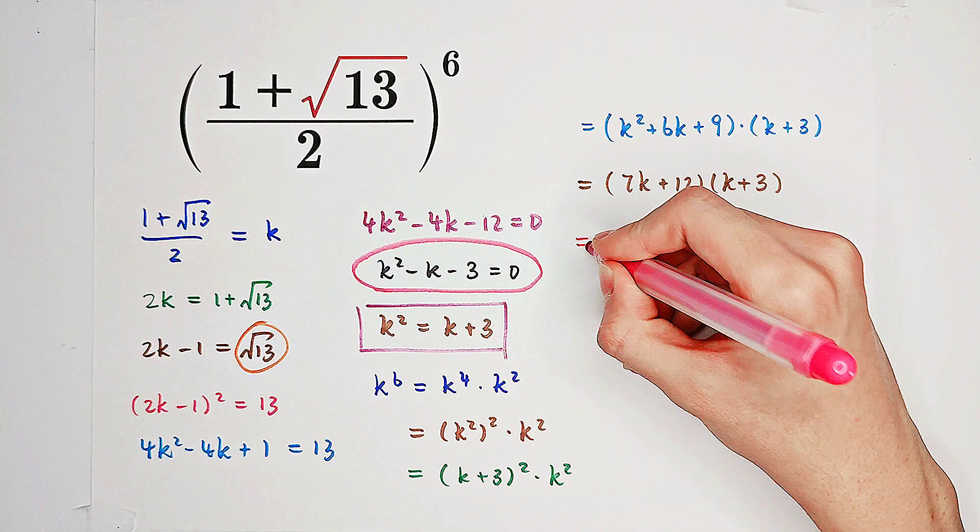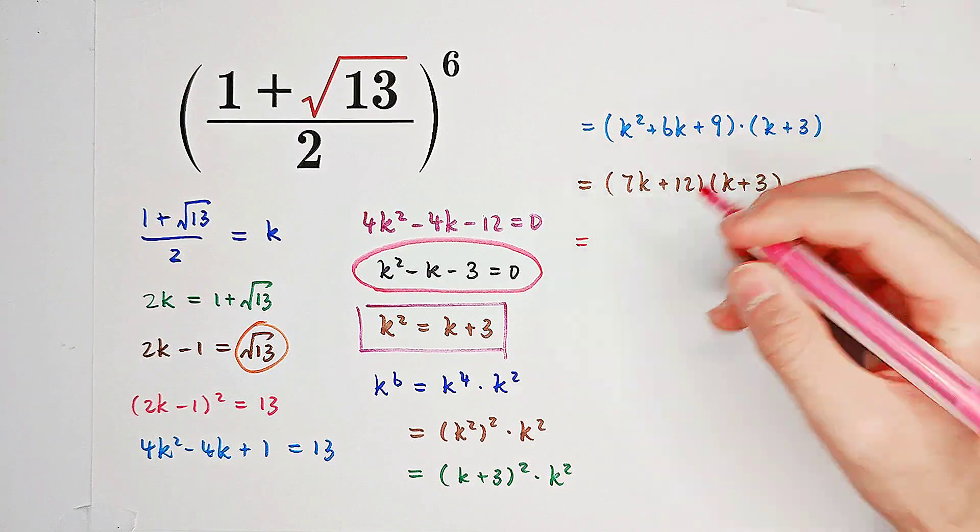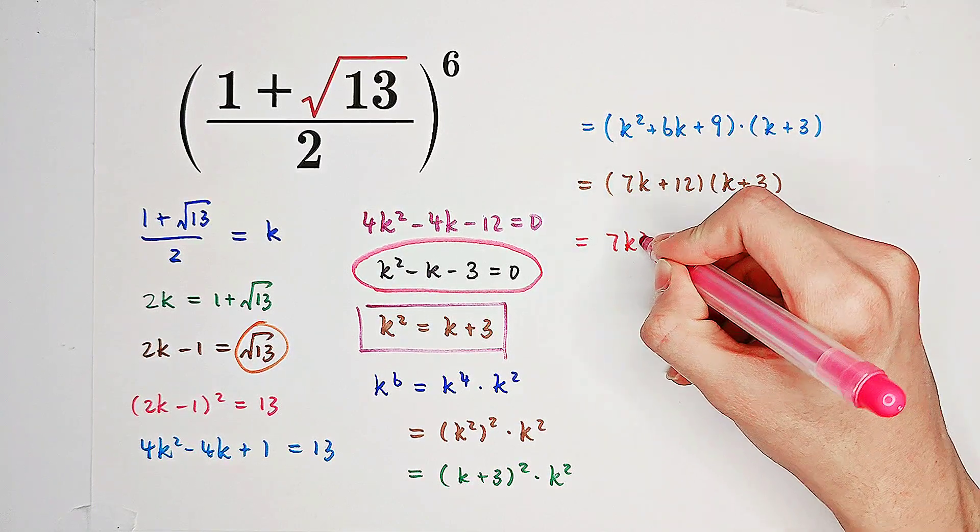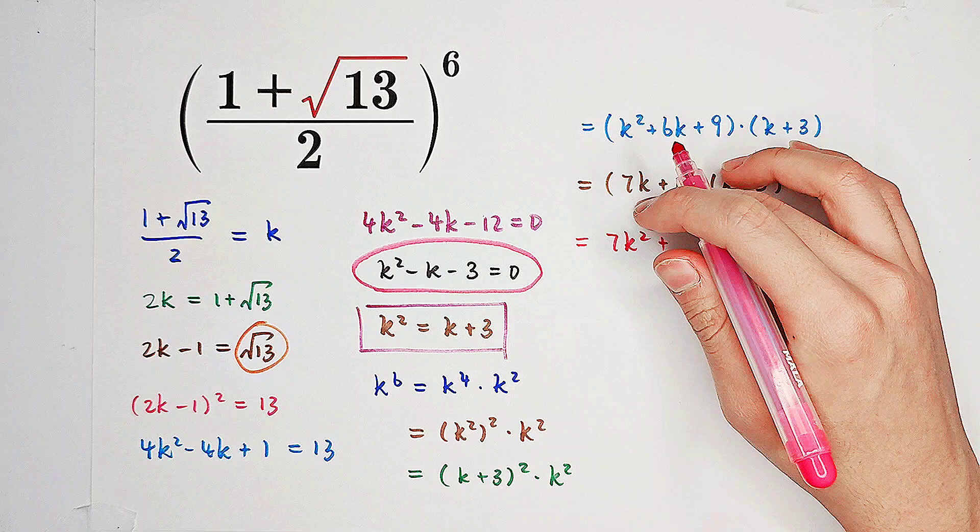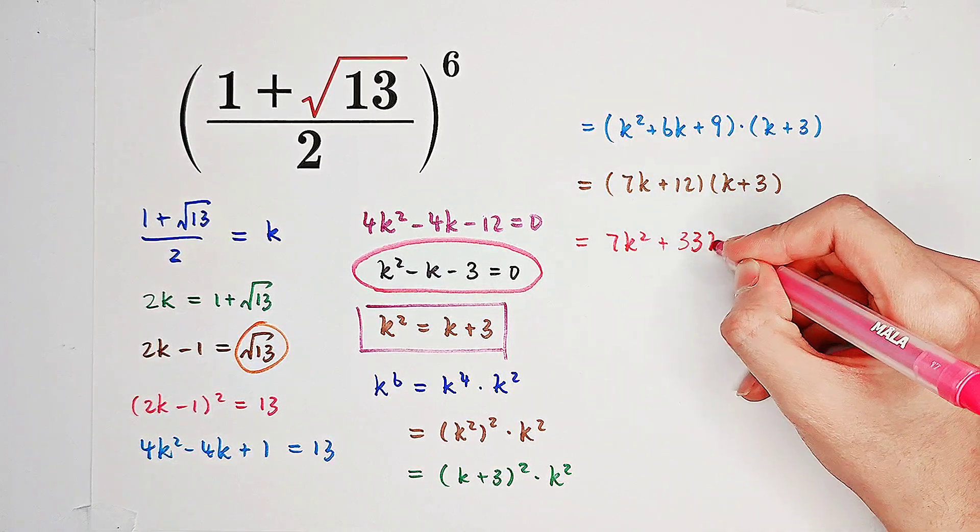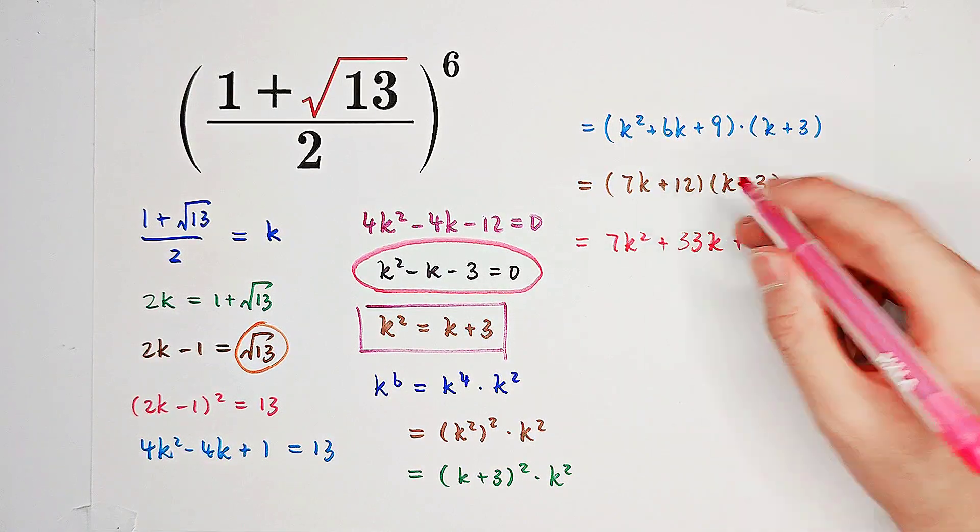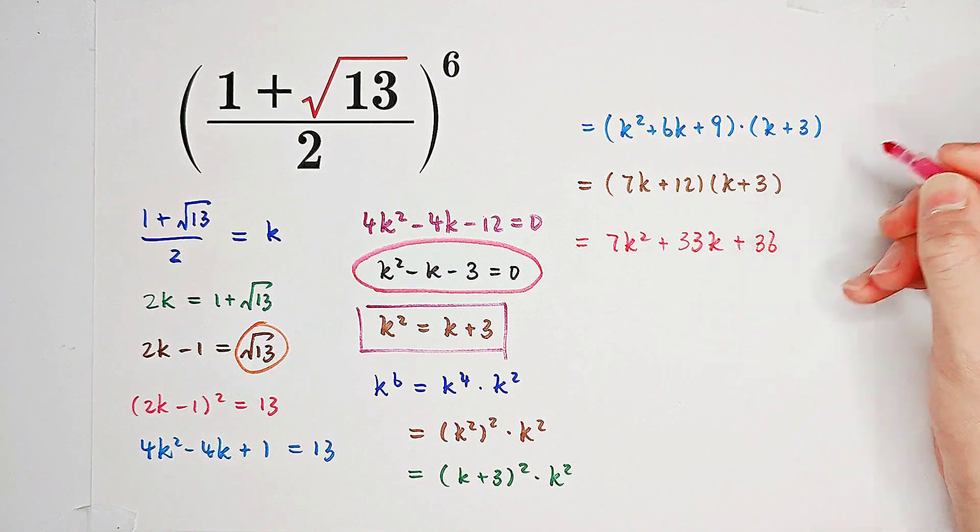Now, expand this thing again. It is 7k squared plus 12k plus 21k. It is plus 33k. And then plus 3 times 12, it is 36.